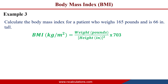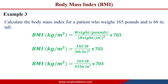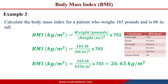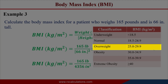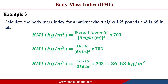Substituting: BMI = (165 lbs ÷ 66²) × 703 = (165 ÷ 4356) × 703 = 26.63 kg/m². The 4356 comes from squaring 66. Comparing 26.63 to the classification table, it falls between 25 and 29.9, which indicates that this patient is overweight.